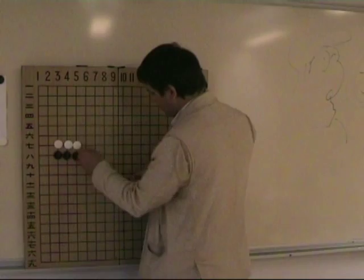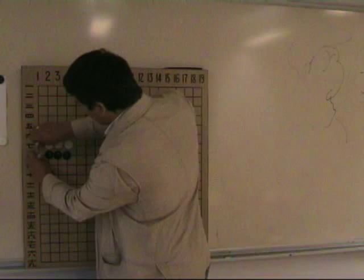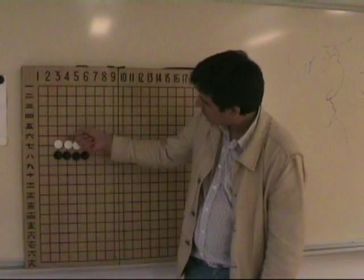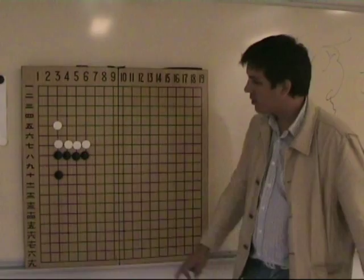It's an easy way to... quite an easy yose problem. But what about this? What about if we meet this kind of shape on the second line? Well, this is white territory, this is black territory, this area. So now the problem is how to play yose here.